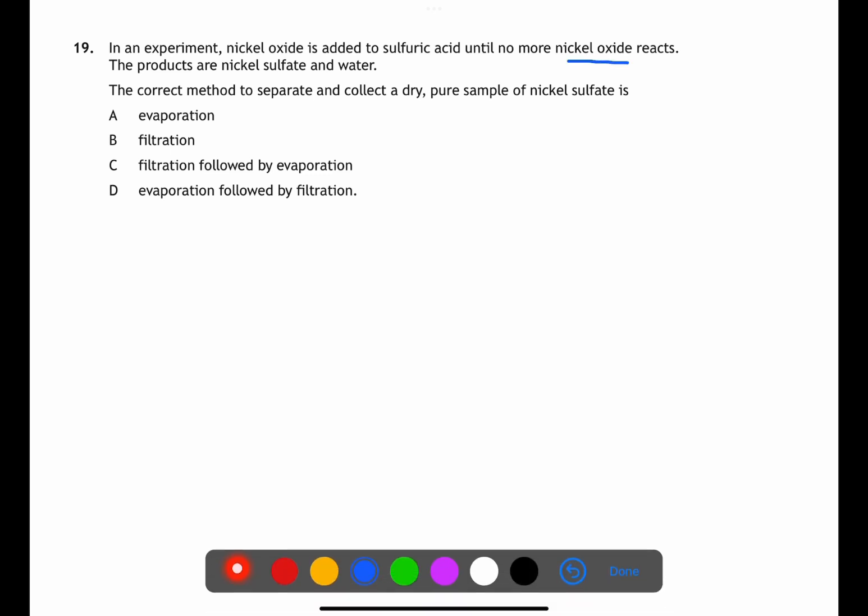For question 19 we'll need to look at the solubility table. Nickel oxide is insoluble and nickel sulphate is soluble. This means that when the nickel oxide is added to the sulfuric acid some excess will be left behind. We'll remove this by filtration. The soluble nickel sulphate can then be obtained by evaporation.